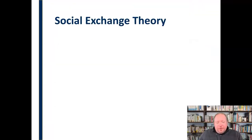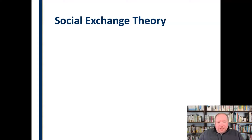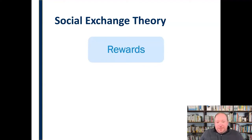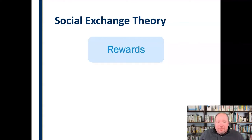Another theory we can look at is called social exchange theory, which applies both in terms of attraction and relational maintenance — both the formation and maintenance of a relationship. Social exchange theory really just breaks things down into a simple equation. That equation starts with rewards — the rewards that are going to be possible, or that we are receiving, in this relationship.